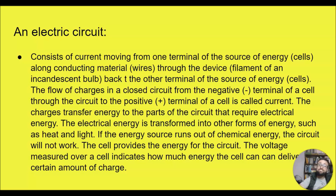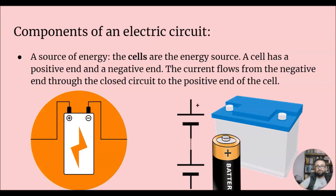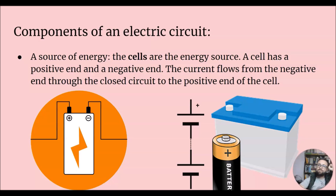The voltage measured over a cell indicates how much energy the cell can deliver for a certain amount of charge. A source of energy — your cells — is a component of an electric circuit. A cell has a positive side and a negative end. Very importantly, the current flows from the negative end through the closed circuit all the way back to the positive end of the cell — negative to positive.